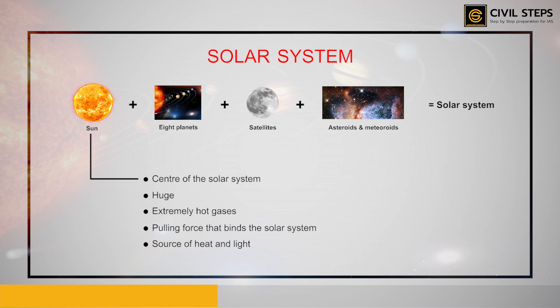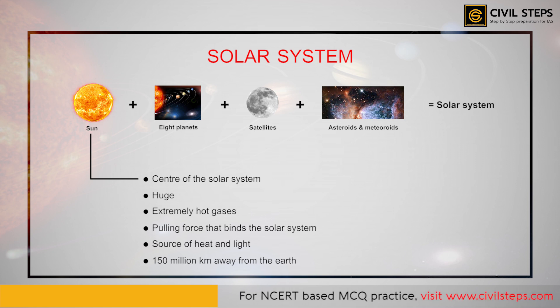The Sun is about 150 million kilometers away from the Earth. Therefore, we can say that the Sun serves as the nucleus, or the center, of the solar system, which binds the entire solar system.